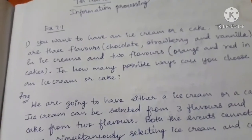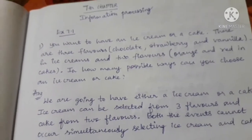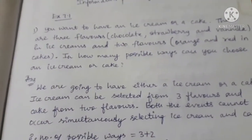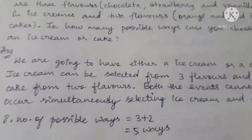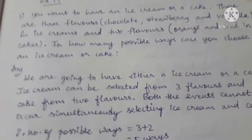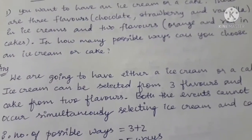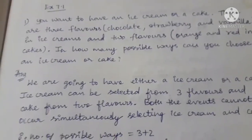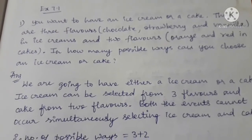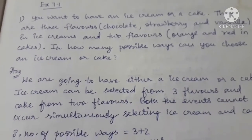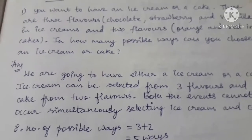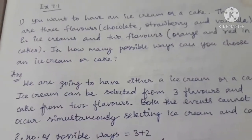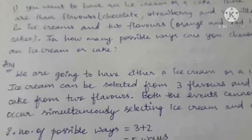In exercise 7.1, there is one type of question which is very, very important. It is a very interesting game because it is an eating game — whichever you choose you should eat. The question is: you want to have an ice cream or a cake. There are 3 flavors — chocolate, strawberry, and vanilla in ice cream — and 2 flavors: orange and red velvet cakes. In how many possible ways can you choose an ice cream or a cake?